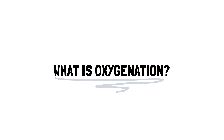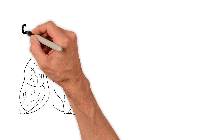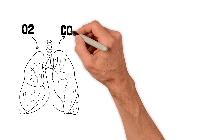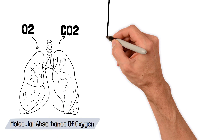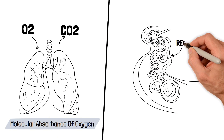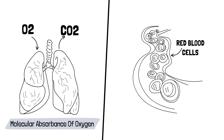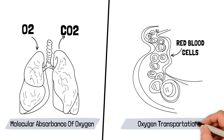What is oxygenation? To give the medical definition, it is a term that refers to the molecular absorbance of oxygen. When you breathe, air enters the lungs and oxygen is picked up in the hemoglobin of red blood cells so it can be transported and distributed to the tissues of the body.